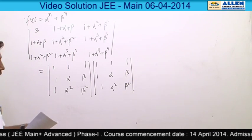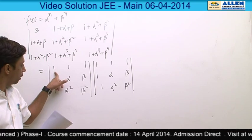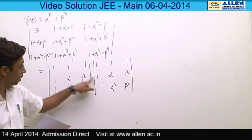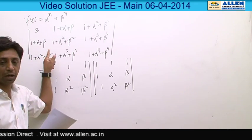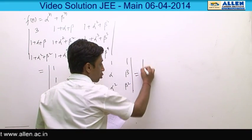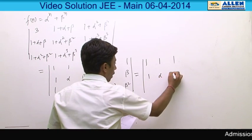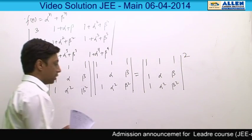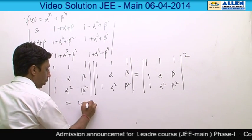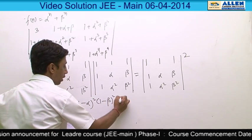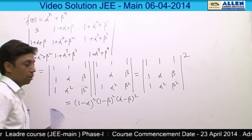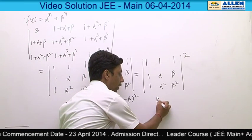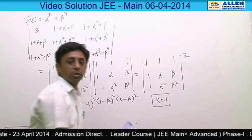We can split this determinant as a product of two determinants, each being |1 1 1; 1 α β; 1 α² β²|. Multiplying these two determinants and checking all nine elements confirms this. The result is the square of this determinant. This is a standard result that expands as [(1−α²)(1−β²)(α−β)]², indicating k = 1. So option 3 is correct.